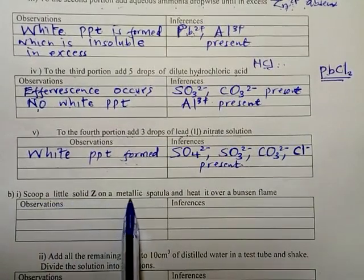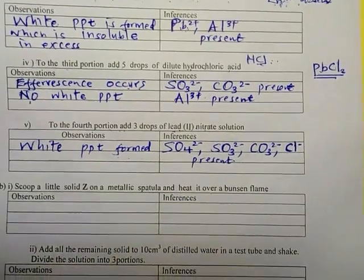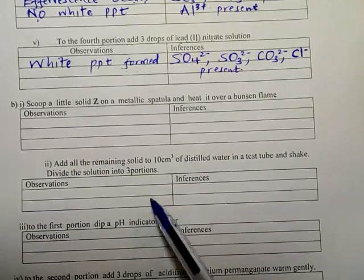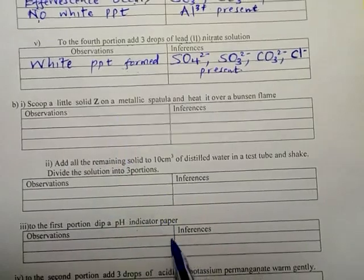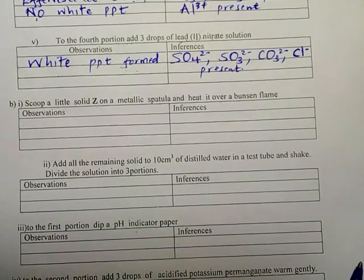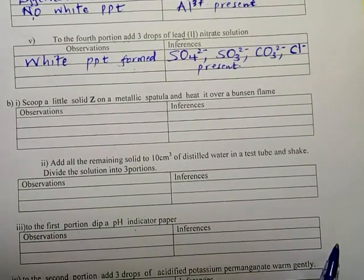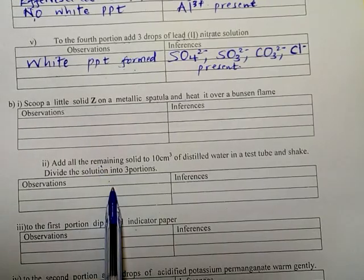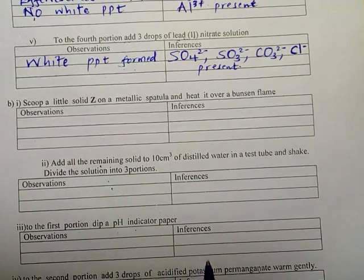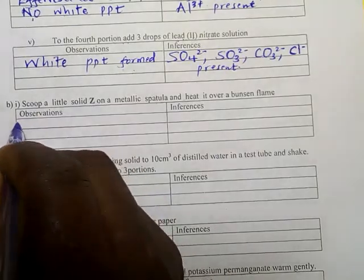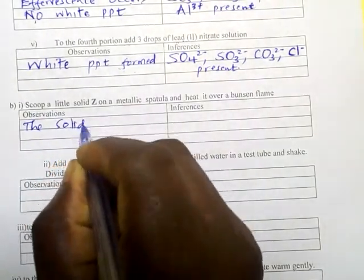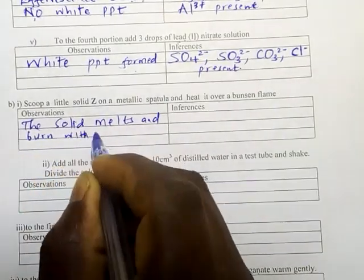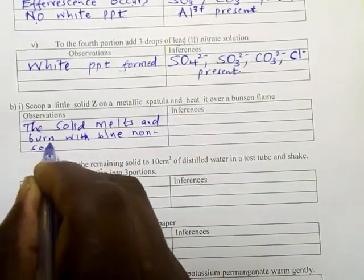Scoop a little solid Z on a metallic spatula and heat it over a bunsen flame. Observation: So this one is organic. How do you know it is organic? You read it through and see you have acidified potassium permanganate, you have indicator, you have sodium carbonate, you are heating. Then it burns with blue sooty, yellow sooty, and non-sooty flames. So you will be able to know that this one is organic. It is important to know because in inorganic chemistry, when the solid dissolves to form a colorless solution, we don't write soluble salt present. We write whether it is polar or nonpolar.